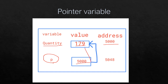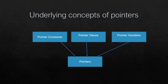The pointer variable 'pointy' stores the memory address of another variable's memory location. This pointer stores a memory address — for example, 5048 — which is the address of another memory location. This is the distinction between pointer constants, pointer values, and pointer variables.